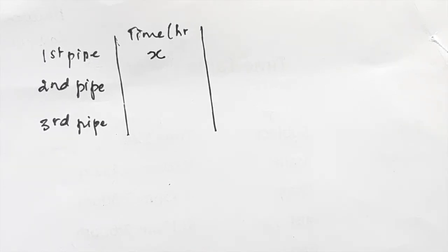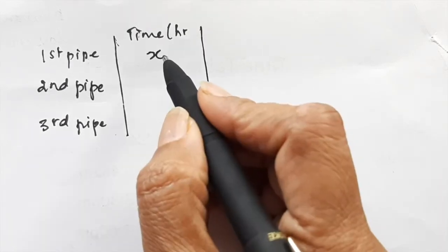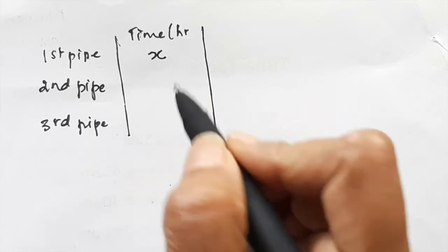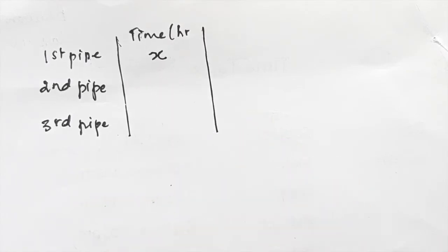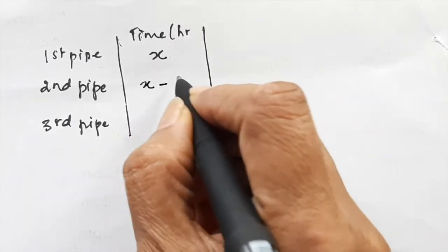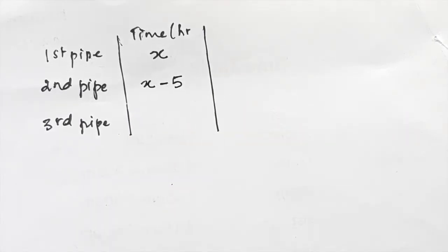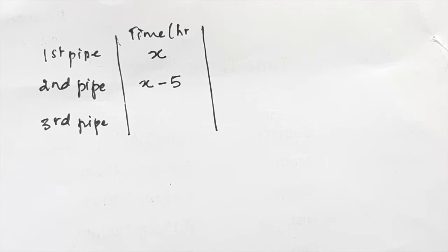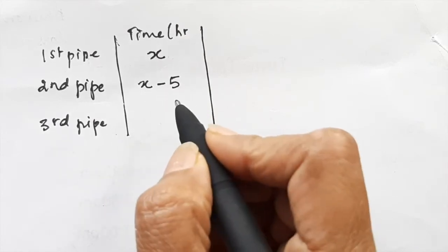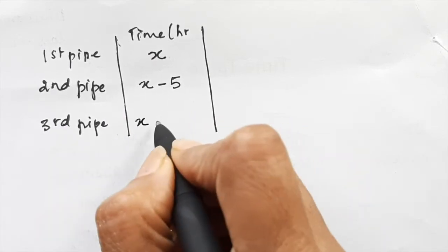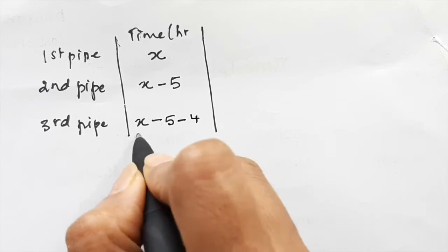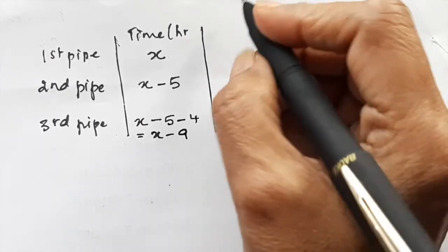The question says that the second pipe fills the tank five hours faster than the first pipe. So if the first pipe is taking x hours, then the second pipe is going to take five hours less, so x minus 5. It says that the second pipe fills it four hours slower than the third pipe, so this x minus 5 is four hours slower which means the third pipe is x minus 5 minus 4, which is x minus 9.